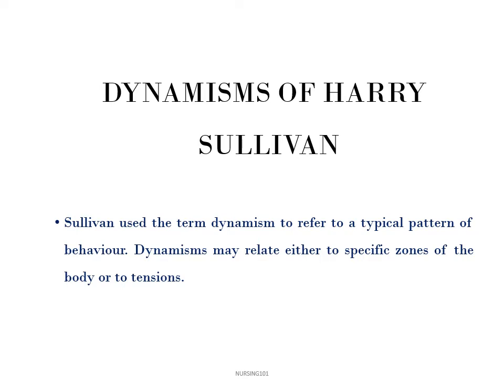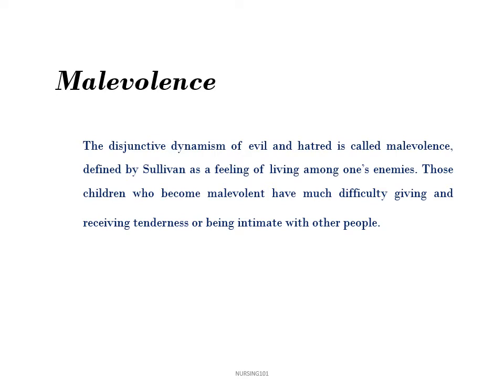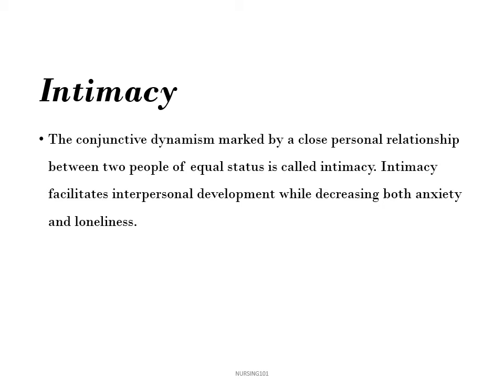Sullivan used the term dynamism to refer to a typical pattern of behavior. Dynamisms may relate either to specific zones of the body or to tensions. The first dynamism in Sullivan's theory is malevolence — the disjunctive dynamism of evil and hatred — defined by Sullivan as a feeling of living among one's enemies. Those children who become malevolent have much difficulty giving and receiving tenderness or being intimate with other people.